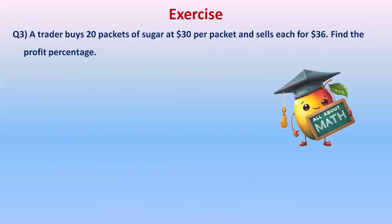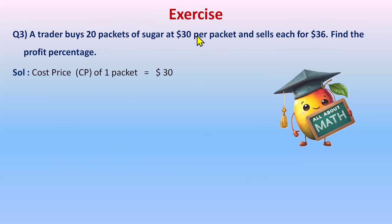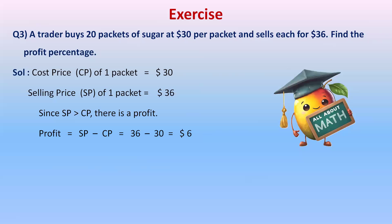Let's see another exercise. A trader buys 20 packets of sugar for 30 dollars per packet and sells each for 36 dollars — find the profit percentage. Since both the cost price and selling price are given per packet, we need not multiply by 20. The cost price of one packet is 30 dollars and the selling price is 36 dollars. Since selling price is greater, there is a profit of 6 dollars. The profit percent formula is profit upon CP multiplied by 100.